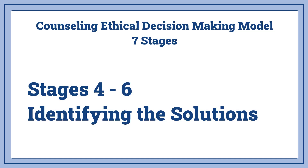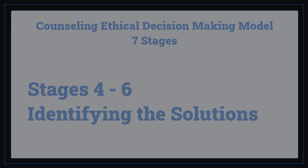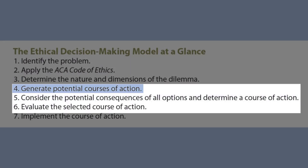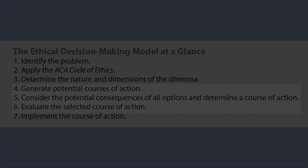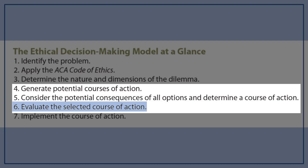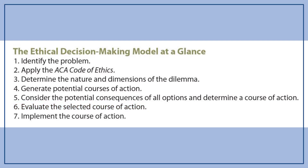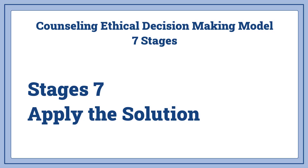Steps four through six are finding the solution: generate potential courses of action; consider potential consequences of each course of action for all parties involved — not just yourself, but also clients, supervisors, stakeholders, whoever it might be; and six is evaluate the selected course of action. Step seven of this seven-stage model is to apply the solution.